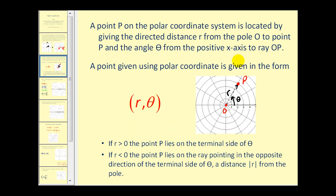Point P on the polar coordinate system is located by giving the directed distance R from the pole, and the angle theta from the positive x-axis to ray OP. The distance from point O to point P is the directed distance R, and the angle formed between this ray and the polar axis is angle theta.